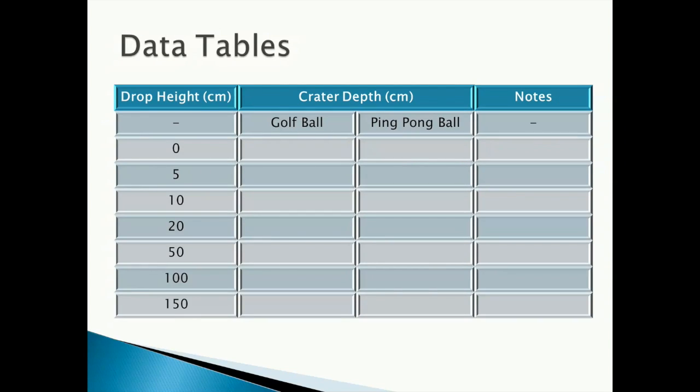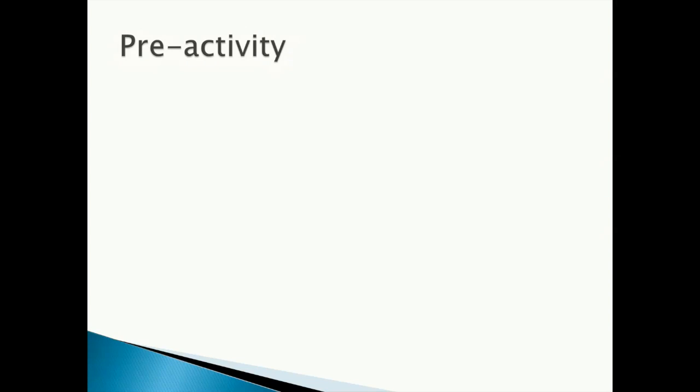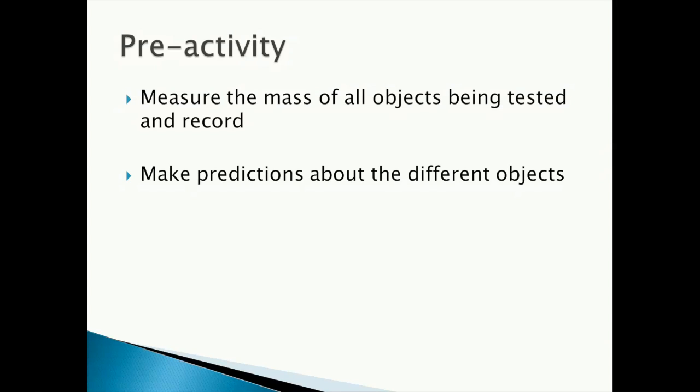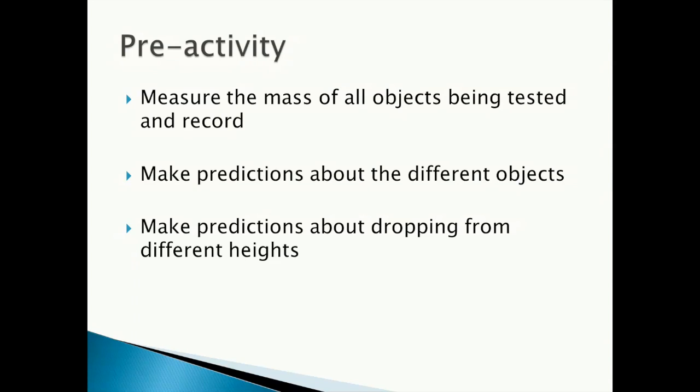Before you begin, create a data table. The leftmost column should be the drop height, while the middle columns should be the crater depth in centimeters for each object you wish to test. Finally, include a column on the right for your notes and observations for each trial. Before you begin, measure the mass of all objects being tested and record. Make predictions about the different objects and about dropping the objects from different heights.